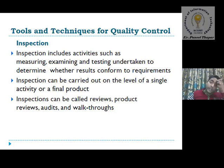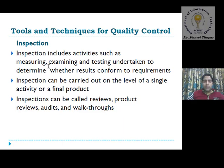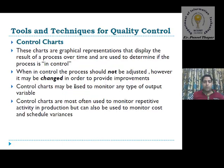Tools and techniques for quality control include, first, the inspection tool. We check and control quality through inspection. Inspection includes activities such as measuring, examining, and testing to determine whether the result conforms to requirements or not. Inspection can be carried out at the level of a single activity or the final product, and can also be called a review, audit, or walk-through.